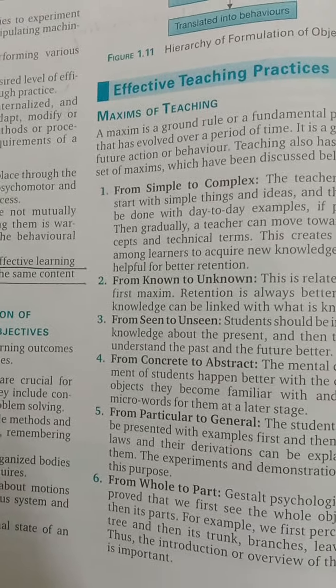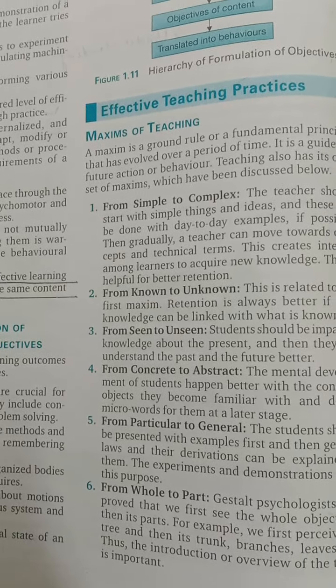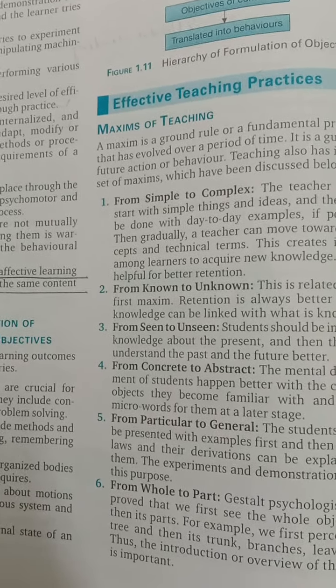From known to unknown — we should move from what is already known to what is unknown. From seen to unseen. From concrete to abstract — concrete means what is real, and abstract means what we cannot see, only think about.